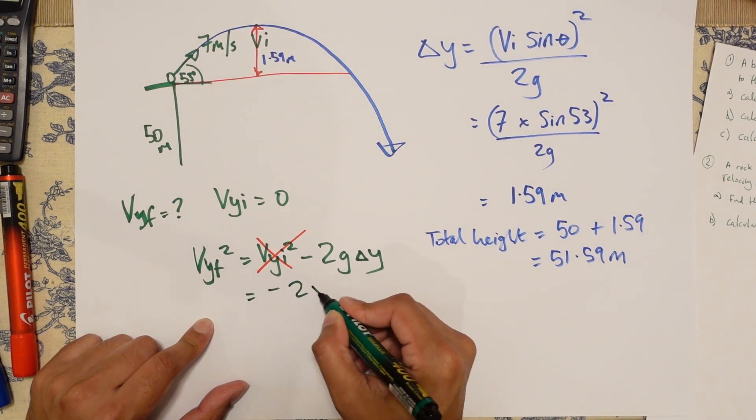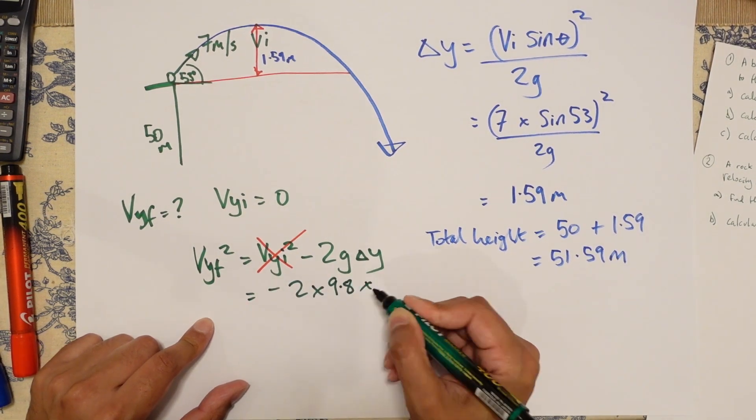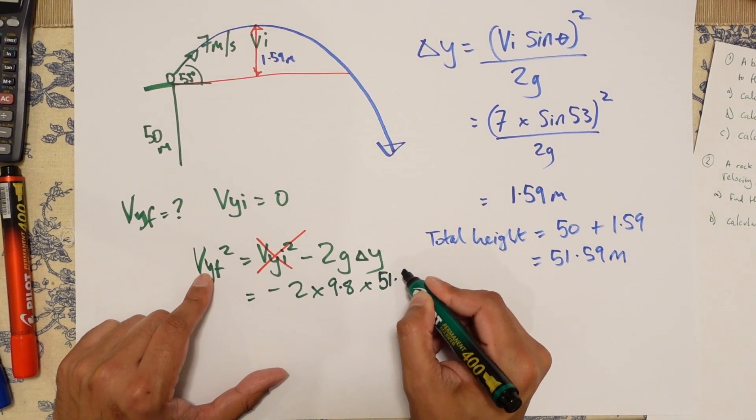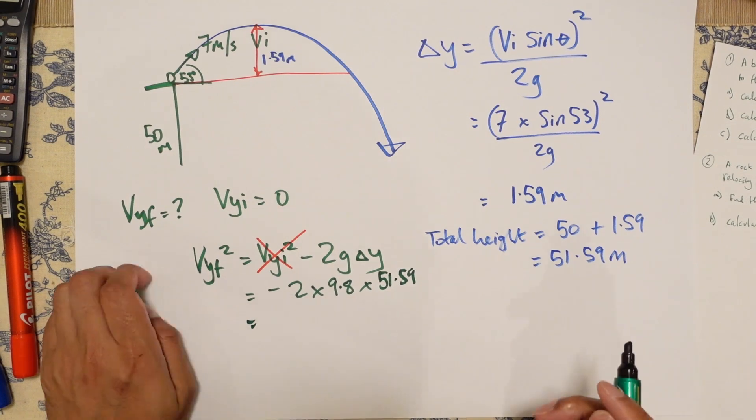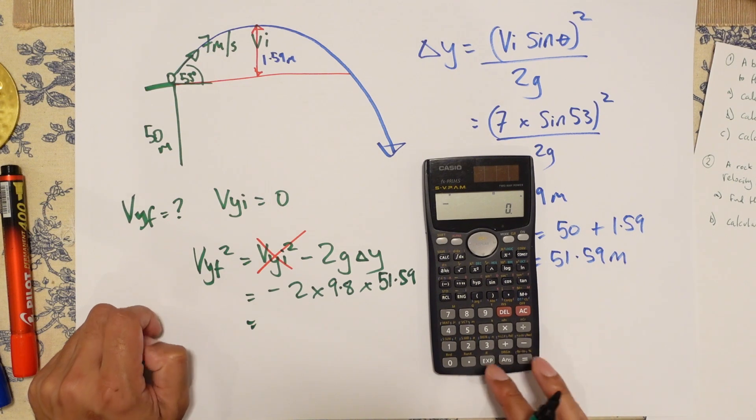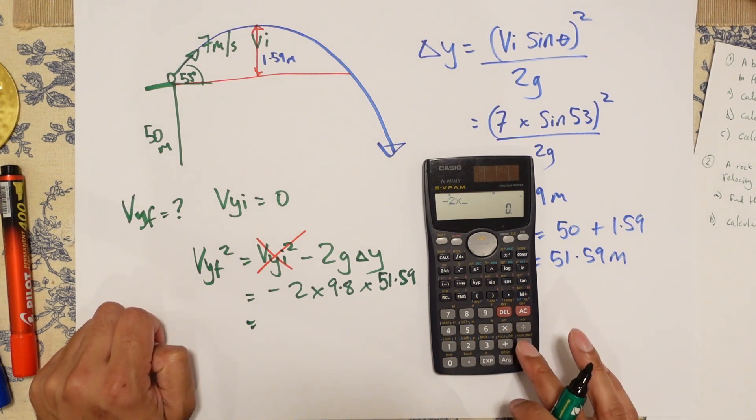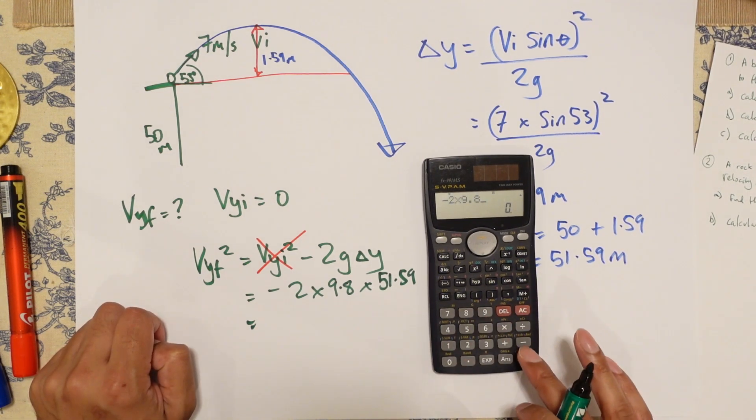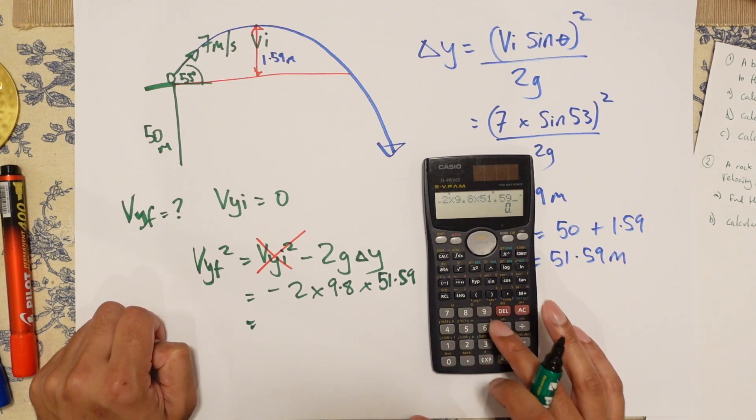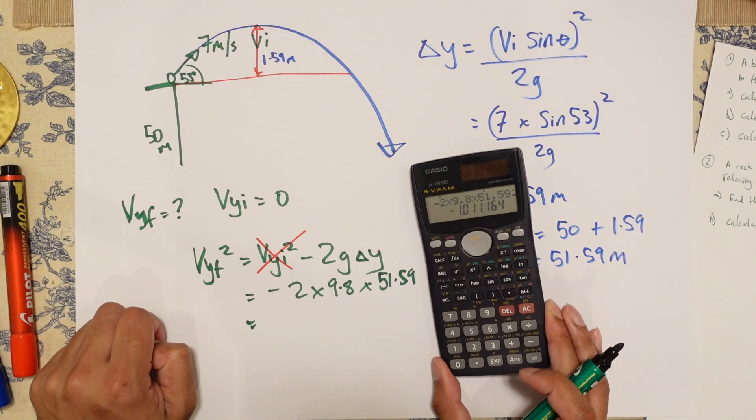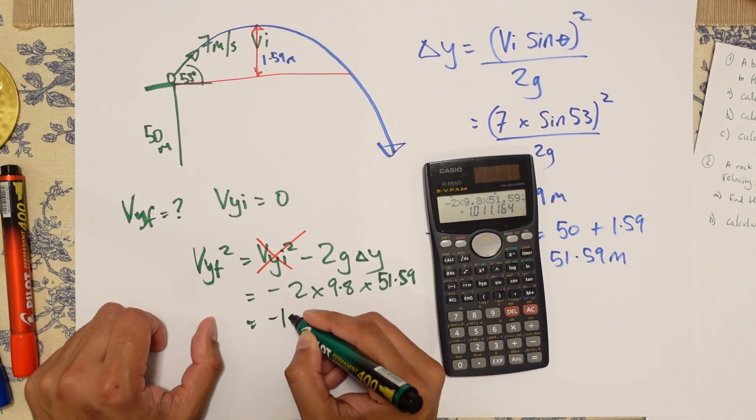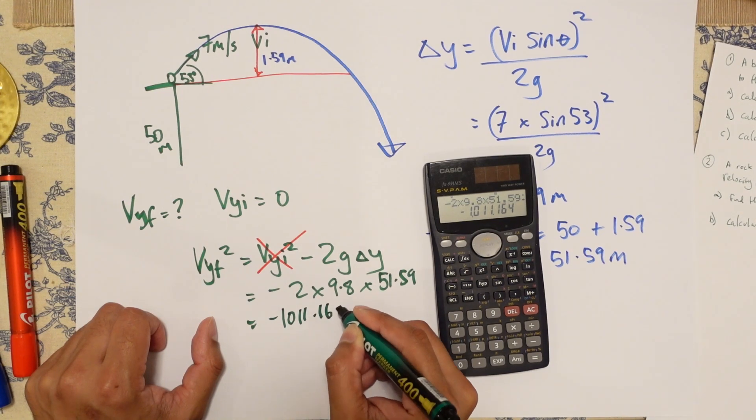So minus 2 times 9.8 times delta Y is 51.59.